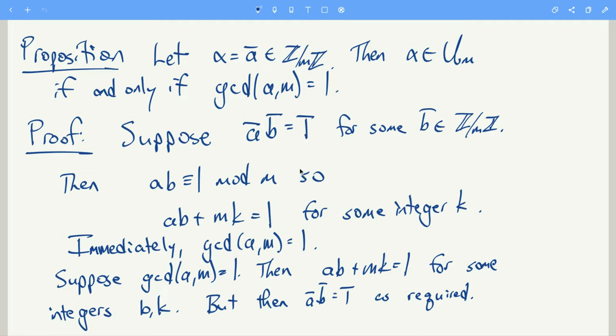So let's prove this proposition. Let's suppose that a bar is a unit modulo m, so like a bar times b bar is 1. What does that mean? Well, it just means that ab is congruent to 1 mod m.